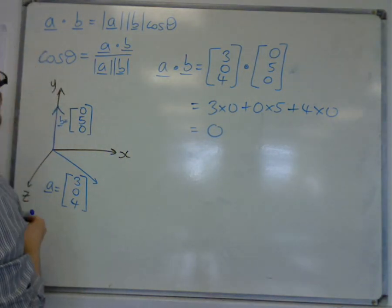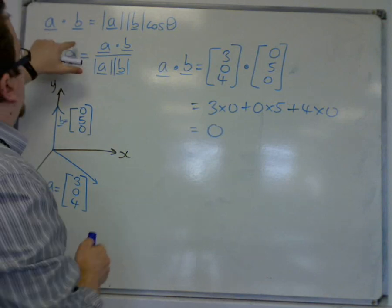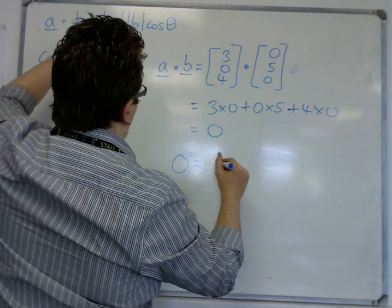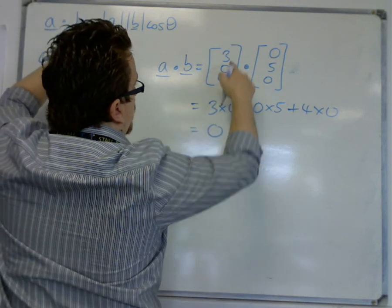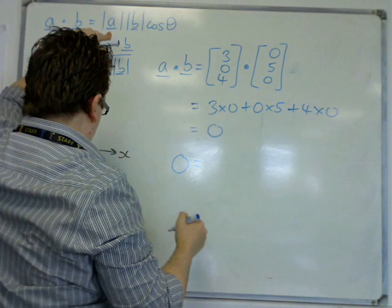Which would mean that 0 is equal to mod a times mod b times cos theta. Actually I'd best do those first, didn't I?